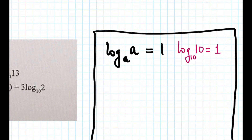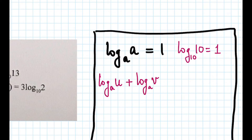Our next log rule is: log base a of u plus log base a of v is equal to log base a of u times v.